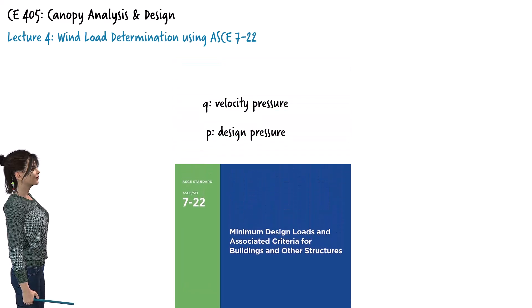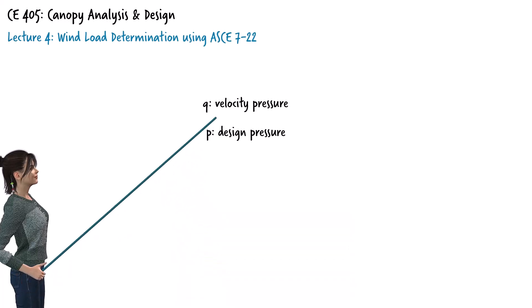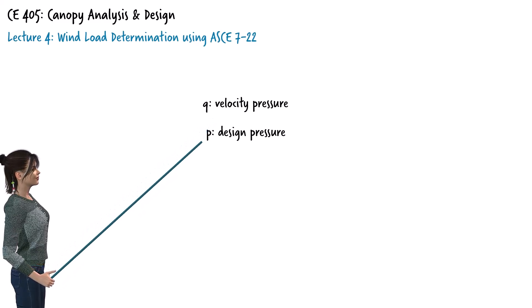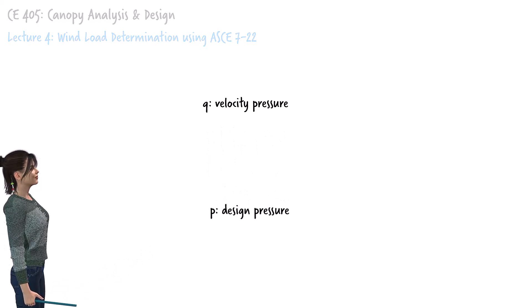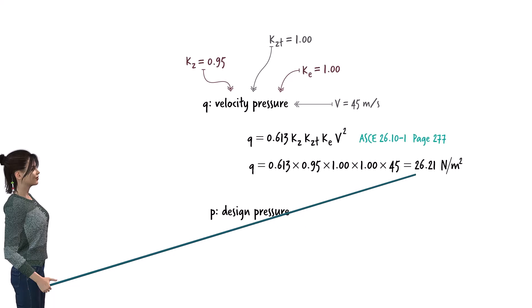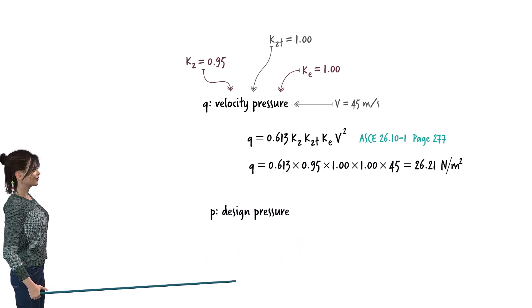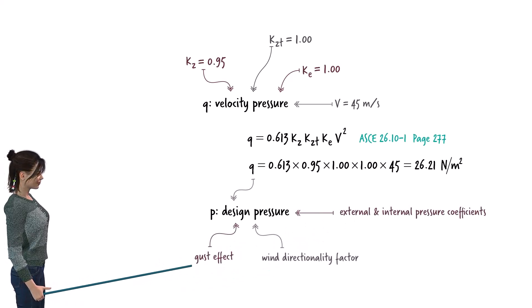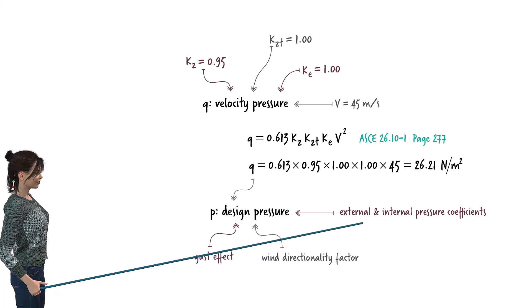The wind load provisions are centered around two related parameters: wind velocity pressure, denoted by the letter Q, and design pressure, denoted by P. In Lectures 2 and 3, we described and determined the coefficients that define Q. For our bus terminal, the velocity pressure Q comes out to 26.21 newtons per square meter. The design pressure P depends on Q, the gust effect factor, the wind directionality factor, and two pressure coefficients: external pressure and internal pressure coefficients.